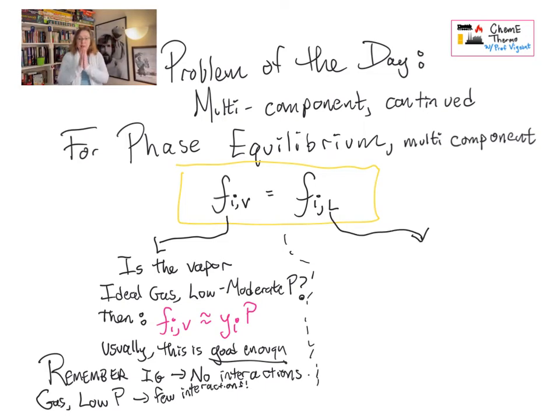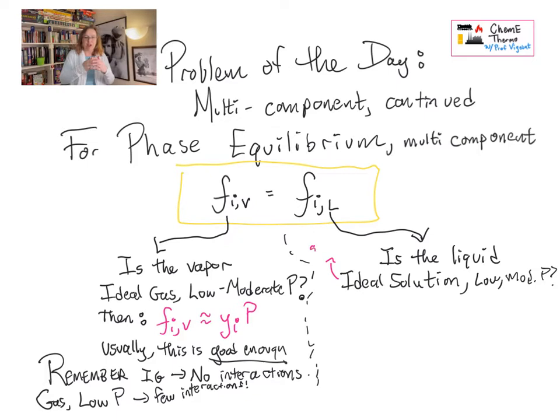On the liquid side we have a couple of assumptions that we could make. We might have an ideal solution. Ideal solution means that the molecules in the mixture encounter each other and interact with each other the same way as they interact with themselves. So we don't have a and b much more attracted to each other than they are to a to a, b to b. That's an ideal solution case. That works for very similar chemicals. If you have a couple of hydrocarbons mixed together, that will tend to be an ideal solution.